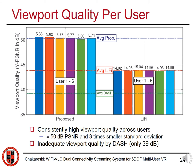Observing the distribution of viewport quality across users, our system provides consistently high quality across all users — slightly more than 50 dB PSNR and three times smaller standard deviation. The DASH baseline, shown by a horizontal dashed line, achieves only 39 dB PSNR, demonstrating that traditional approaches such as DASH cannot provide good quality to deliver 12K 120 frames per second VR content.